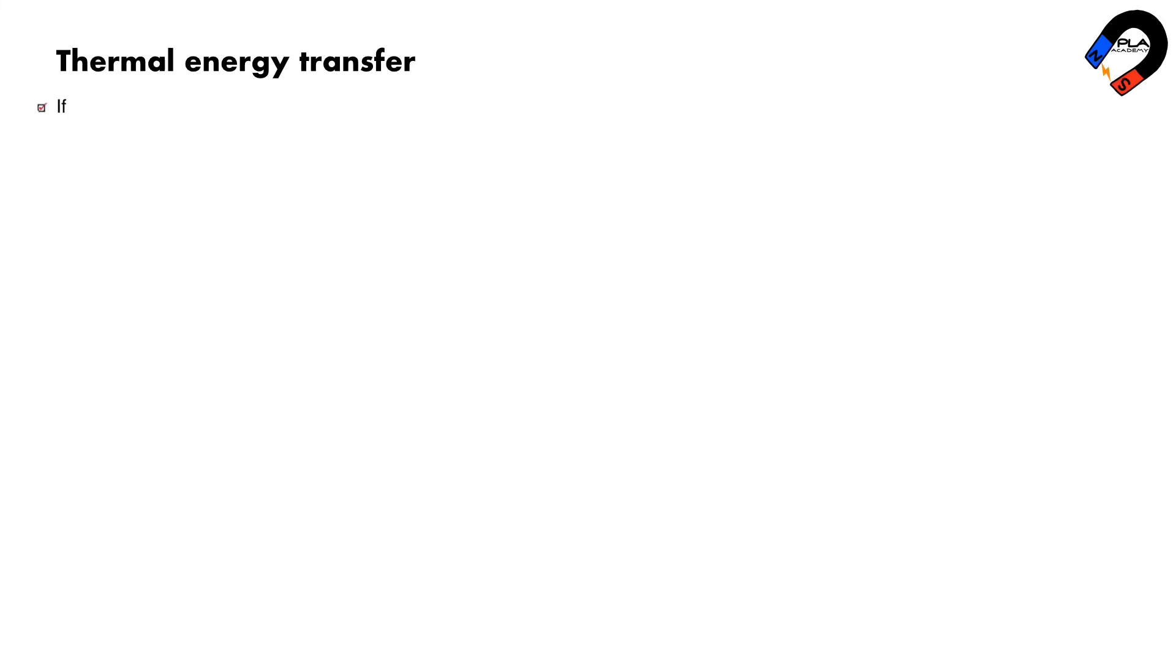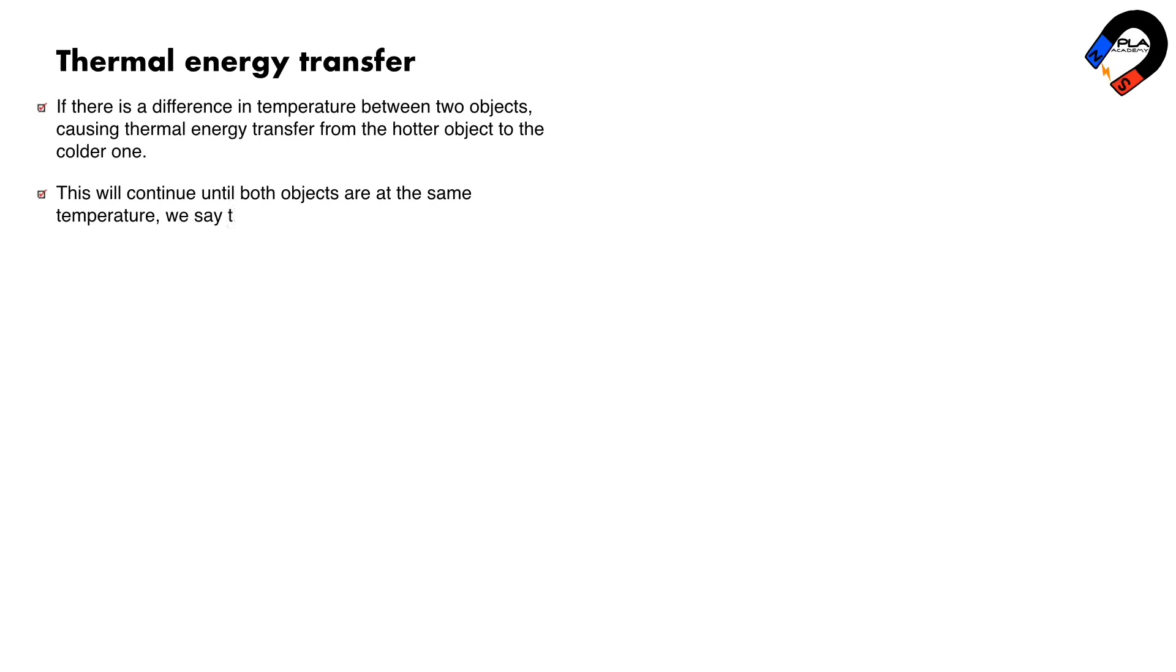Thermal energy transfer. If there is a difference in temperature between two objects, causing thermal energy transfer from the hotter object to the colder one. This will continue until both objects are at the same temperature, we say that they are in thermal equilibrium.